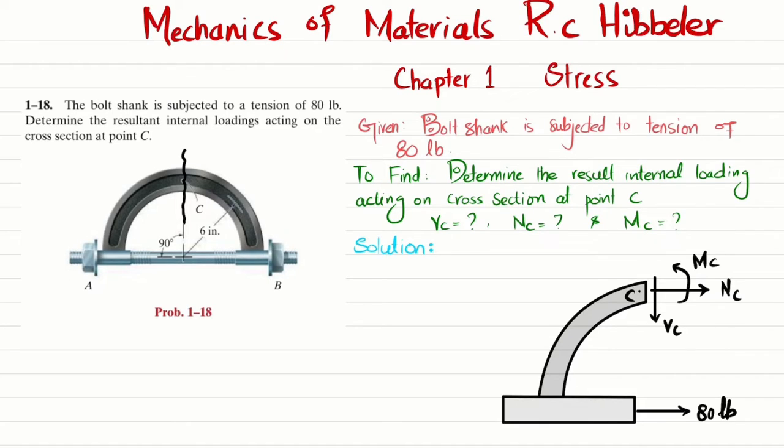The radius from point C is given as 6 inches. This distance from here till the mid of this is 6 inches.